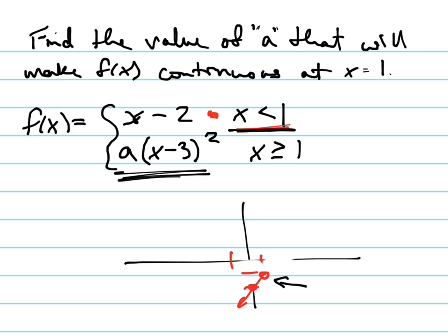Now I'm going to have some parabola here. Notice that this negative 3 right here means that the x-coordinate of the vertex is at 3. The x-coordinate of the vertex is at 3, and this A right here is going to determine how steep it is going up or down.